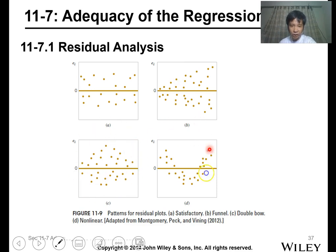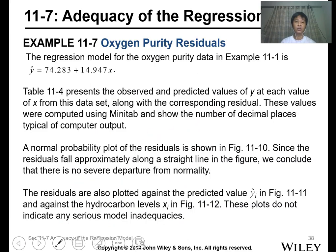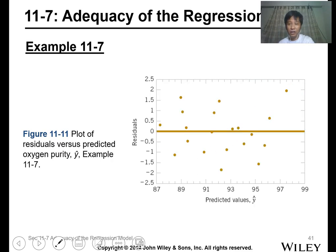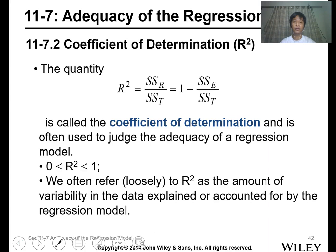For this case, it doesn't follow a linear model—we call this panel, we call this double bow, and this one is non-linear. For example, recalling the residual for oxygen purity that we obtained, this is the usual residual plot, this is the cumulative normal probability, and this is the plot. You can see it's boxed, meaning the regression is linear.